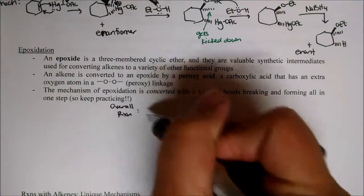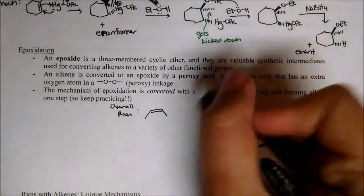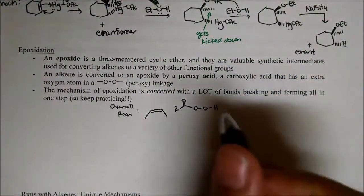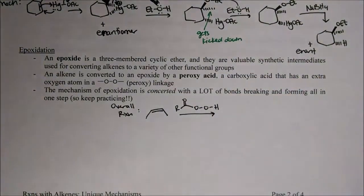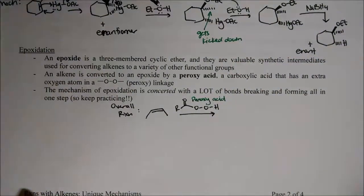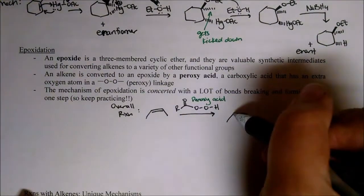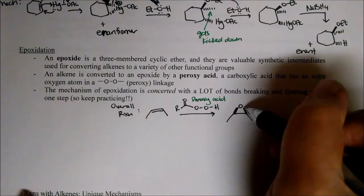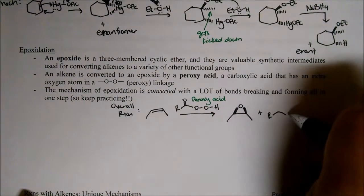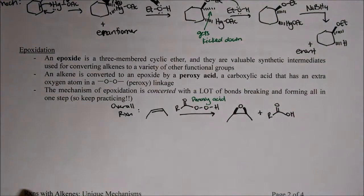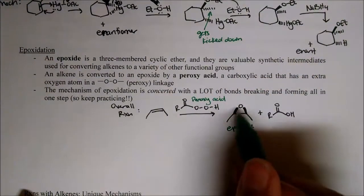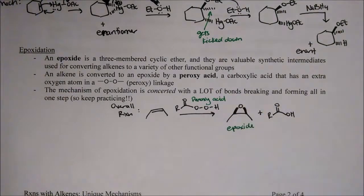Here's what it looks like. We take an alkene and throw in our peroxy acid — keeping the R group ambiguous. It's got a peroxy linkage, this O-O linkage, that's what can be found in peroxides. What we get out is an epoxide — a three-membered ring with an oxygen, a cyclic ether. We also get as a byproduct a carboxylic acid derived from the peroxy acid.